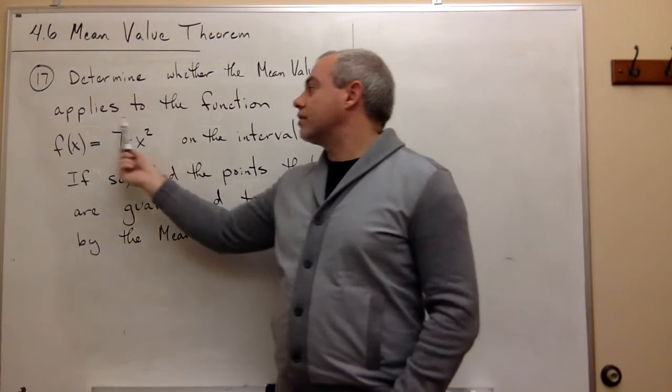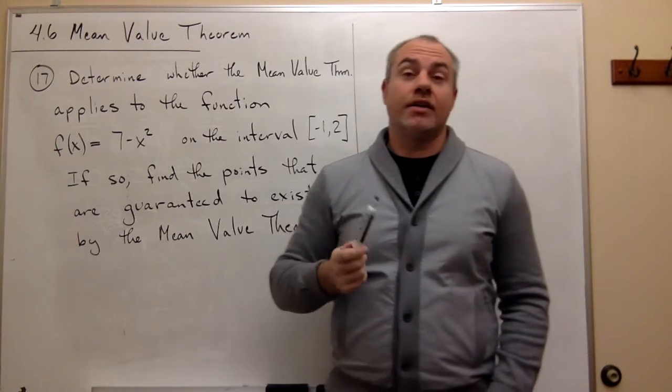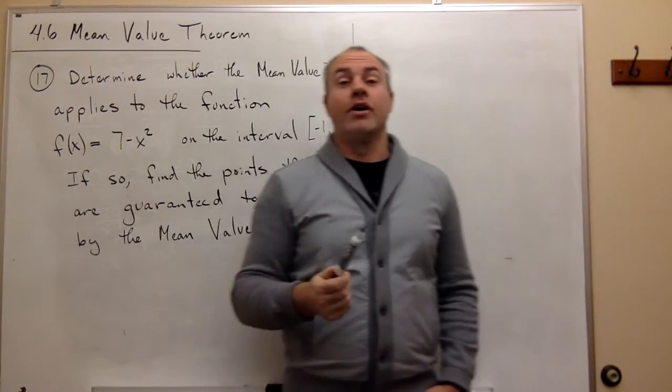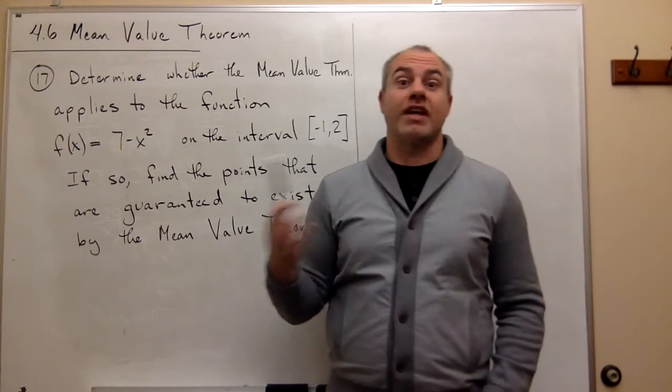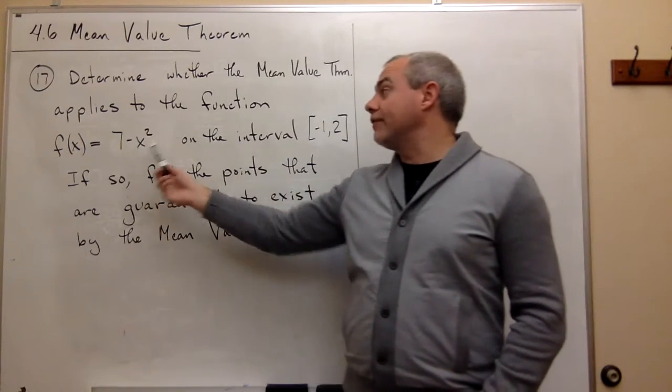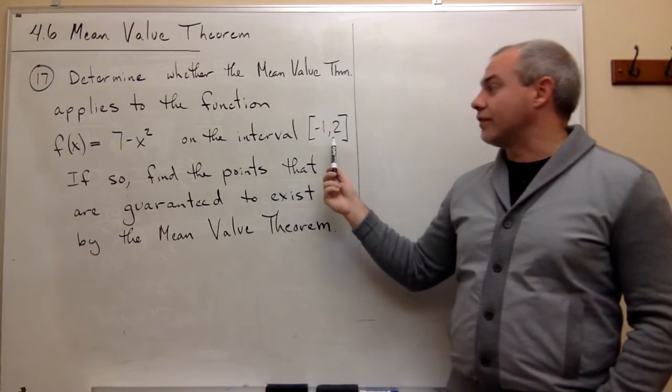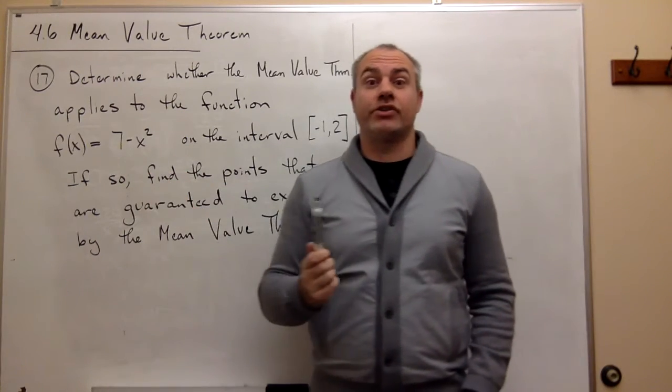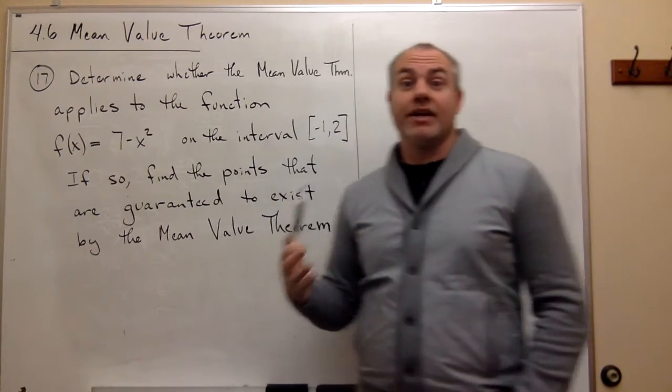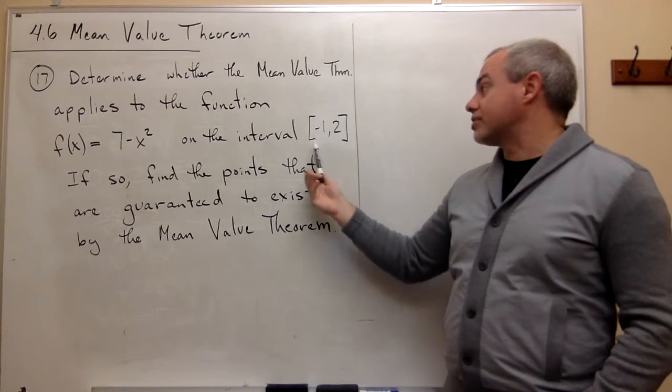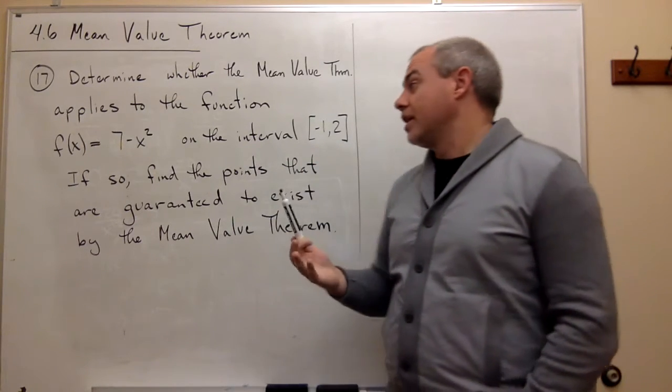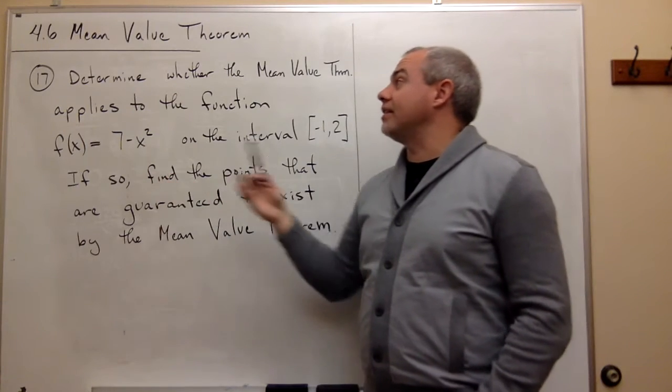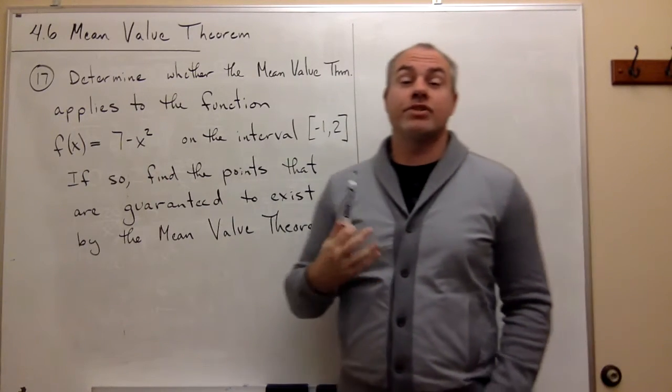Well this thing is pretty trivially continuous on the closed interval because it's a polynomial function, and polynomial functions are continuous everywhere. So this is trivially continuous on this closed interval, and polynomial functions are differentiable everywhere. And since they're differentiable everywhere, it's certainly differentiable on the open interval from negative 1 to 2. So we've got something that the mean value theorem certainly applies.